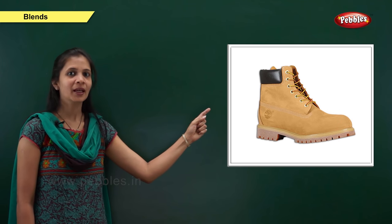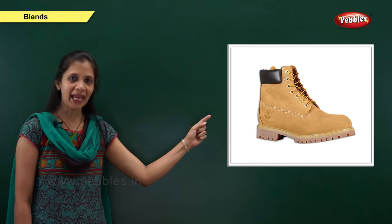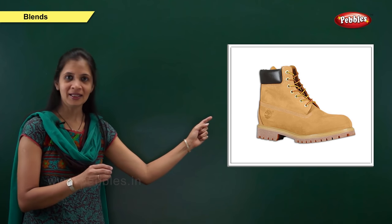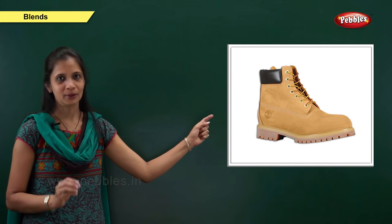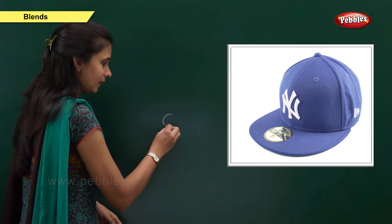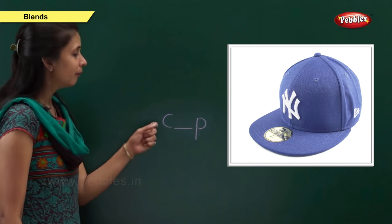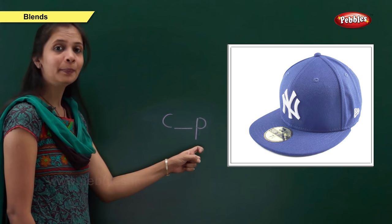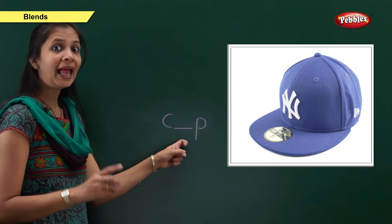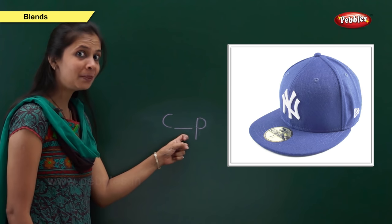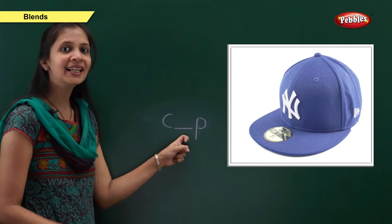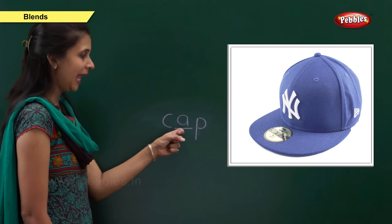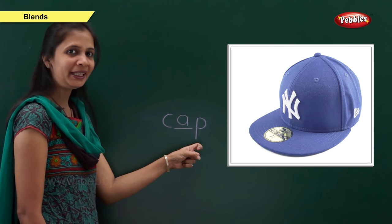Which picture is this? Yes, it is cap. Now what is the sound of this word? It is cap. When the beginning sound is 'k', the letter is c. When the ending sound is 'p', the letter is p. What about the middle sound? The middle vowel is 'a'. The vowel a says 'a'. So: k, a, p — cap. C, a, p — cap.